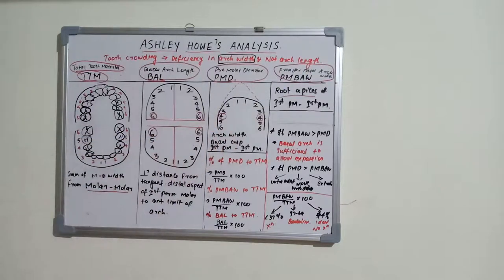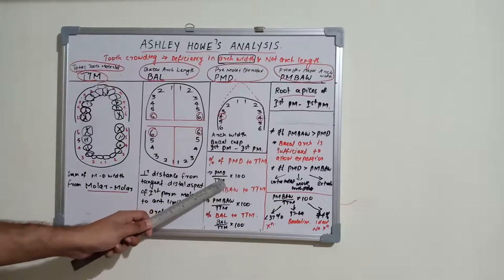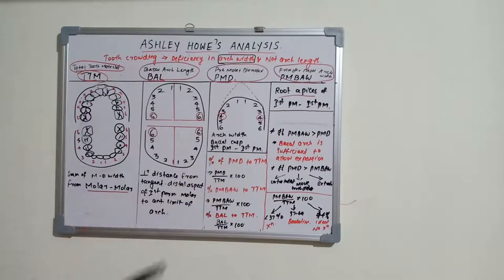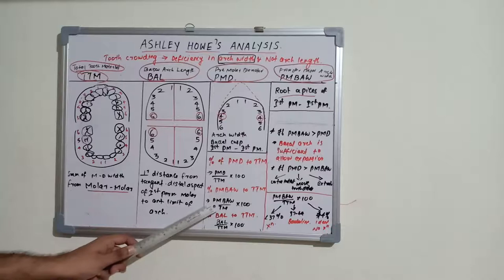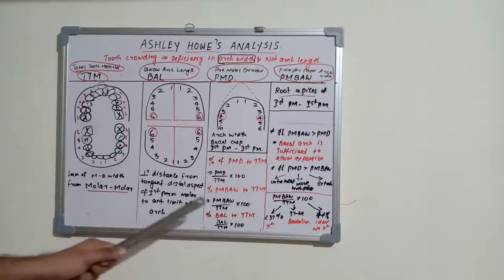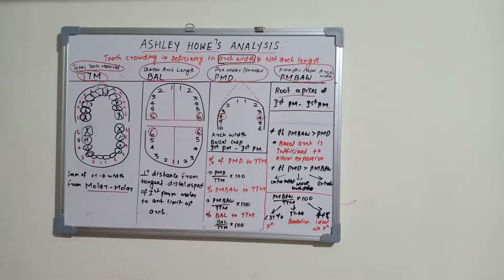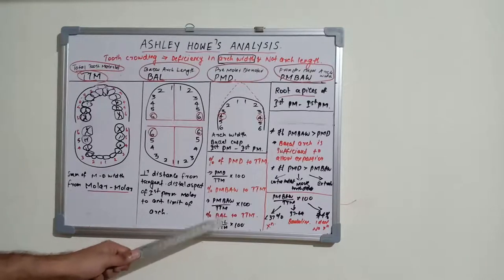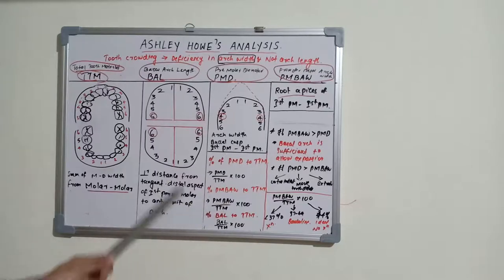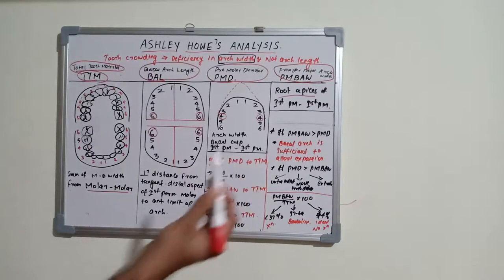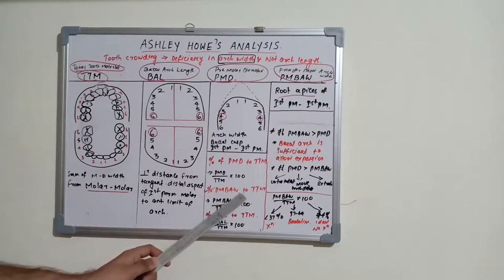The percentage calculations involve dividing each parameter by total tooth material and multiplying by 100. For example: premolar diameter divided by total tooth material × 100, or PMBaw divided by total tooth material × 100, or basal arch length divided by total tooth material × 100. The result most commonly used in clinical assessment is the premolar basal arch width to total tooth material percentage.